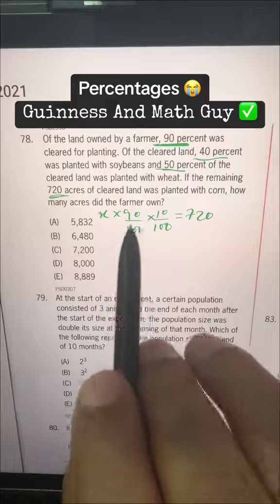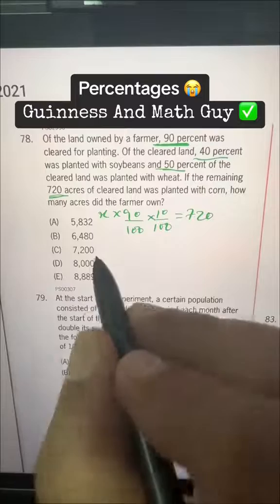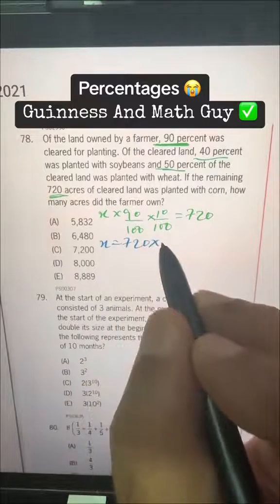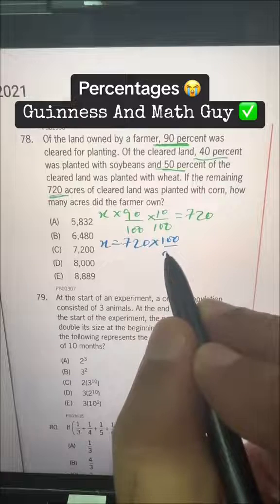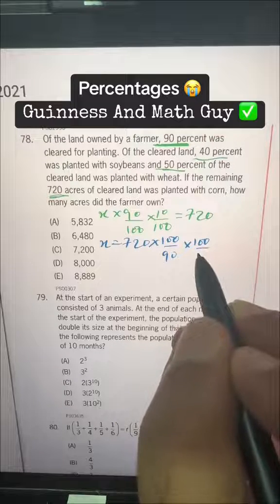Now these both will go to the other side and we will flip them. So X is equal to 720 times 100 over 90 times 100 over 10.